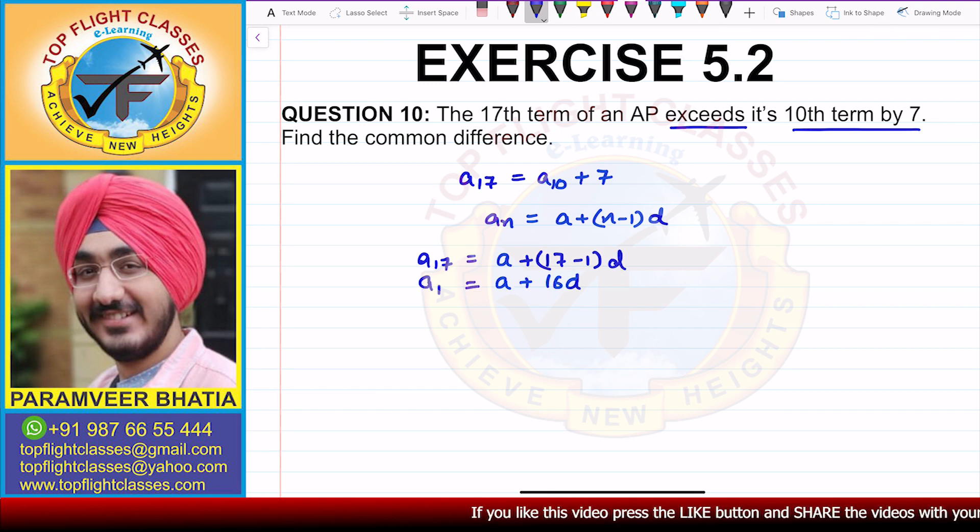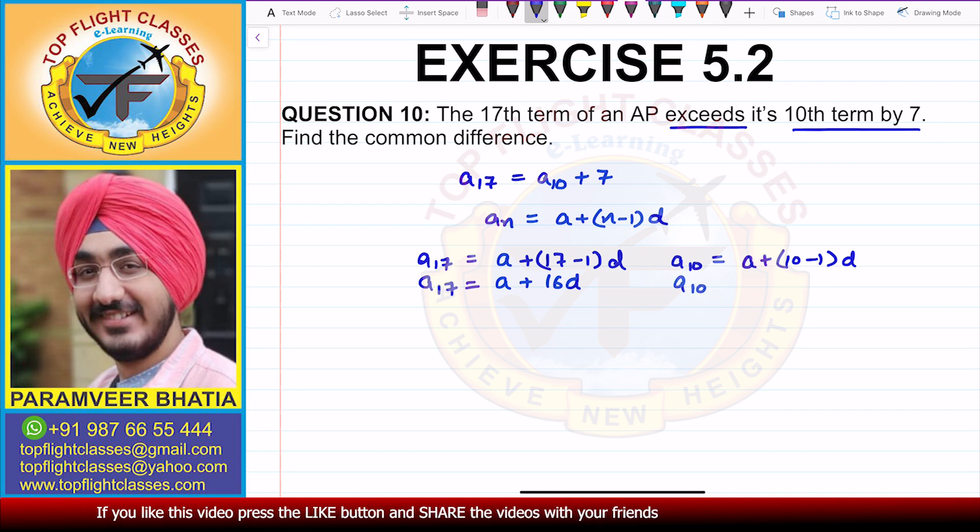And if we find a_10, that will be a plus (10-1)d. So a_10 will come out to be a plus 9d.